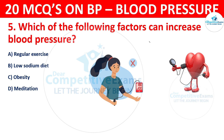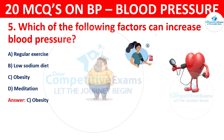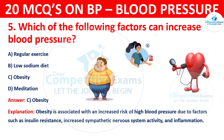The correct answer is C, Obesity. Obesity is associated with an increased risk of high blood pressure due to factors such as insulin resistance, increased sympathetic nervous system activity, and inflammation.